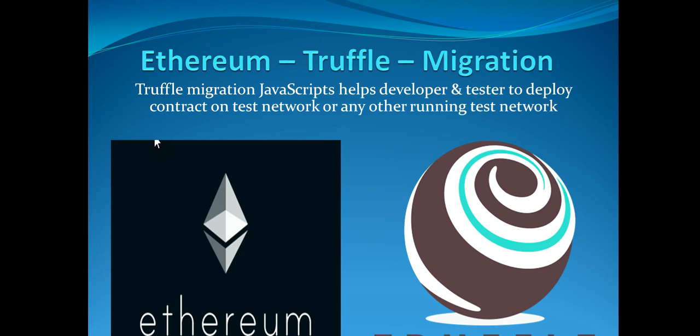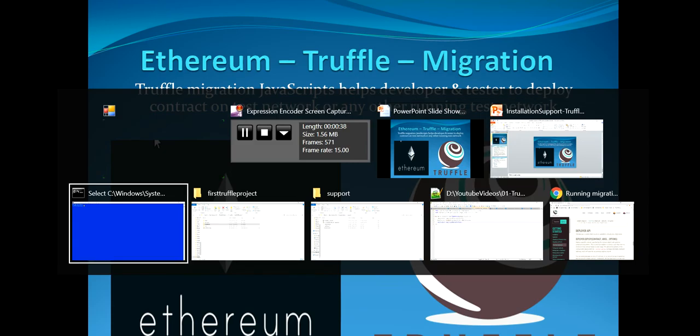Hello everyone, my name is Abhishek Jain. Welcome back to the Blockchain Ethereum tutorial part 6. This part is a continuation of part 5 where we saw how to deploy a contract with the Truffle framework over the inbuilt test network. In this video I'm going to explain in more detail about the various steps we follow, and the most important part is the migration and the migrate command which we used.